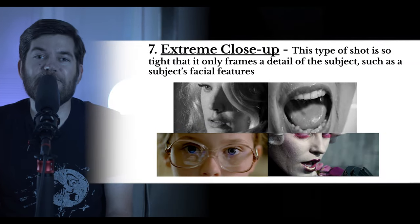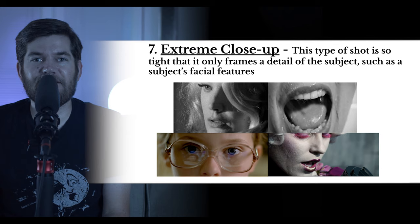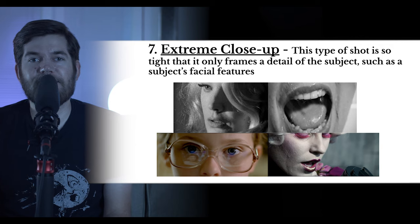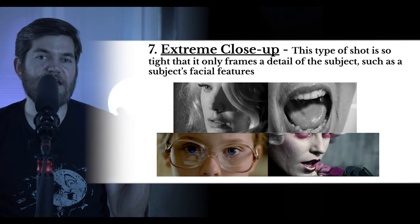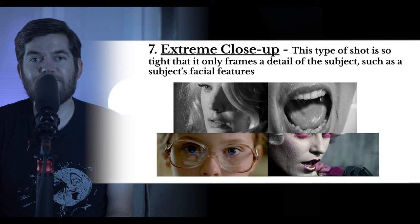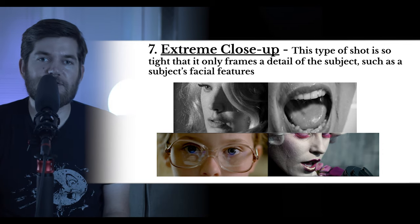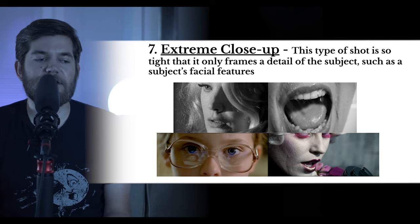The extreme close-up is even tighter. If you don't have a zoom lens, you're really close to someone's face — this frames just a specific detail. Using the basketball example: a close-up would show the whole basketball; an extreme close-up might only show the word 'Spalding' or the bumps. On a person, an extreme close-up shows only one feature — like their eyes or mouth. It's so tight it only frames one detail of the subject.